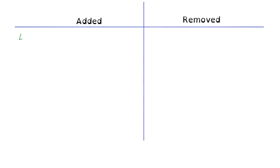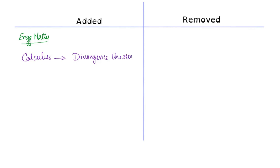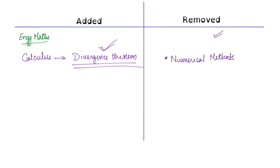We will start with the syllabus change of engineering mathematics. In engineering mathematics, in the topic calculus, the concept of the divergence theorem has been specifically mentioned — previously it was not specifically mentioned, so this is one topic which has been added. One entire chapter that has been removed is numerical methods — this entire topic has been removed.